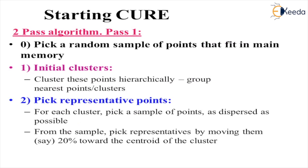Starting from QR, it consists of two passes, so it is a two-pass algorithm. First of all, we perform the selection of random samples from the data set which we can fit in the main memory. In pass one, we initialize the clusters using any clustering mechanism. Then we pick up the representative points — we select them as far away from each other as possible, then move them 20% towards the centroid of the cluster.